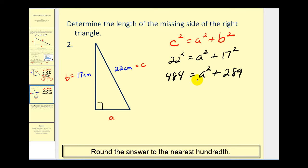22 squared would be 484 must equal A squared plus 17 squared equals 289. So now we have to isolate the A squared, so we'll subtract 289 from both sides. So that gives us 195 equals A squared. And we'll square root both sides of the equation. Again, we're only going to find the principal square root.